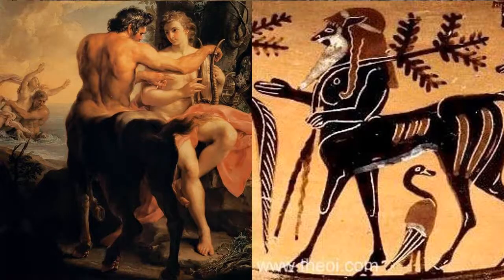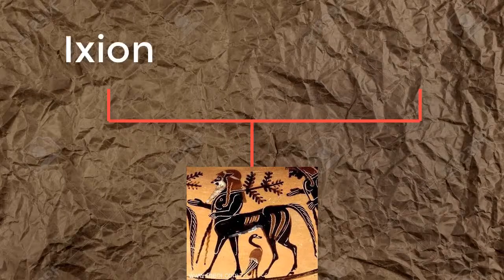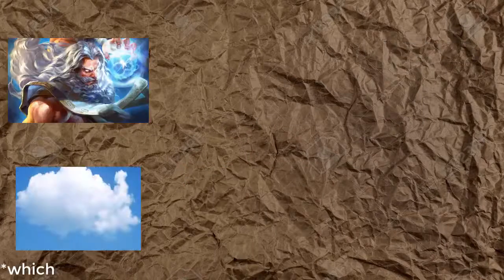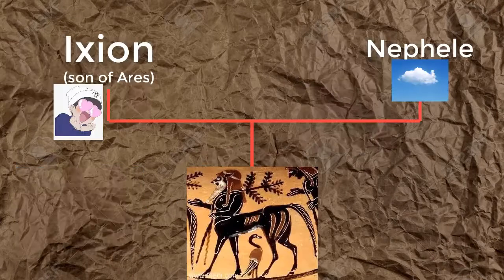Let's have a closer look at the Greek myth of the centaur. It is said that the centaurs came from the union of Ixion, a son of Ares, and Nephele — who was a cloud that Zeus made to look like Hera to prove that Ixion was lusting after his wife. Well, it worked. The cloud got pregnant and forth came the first centaur.